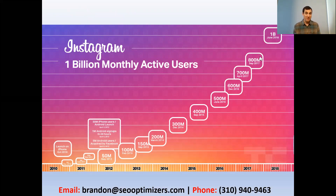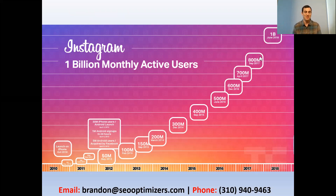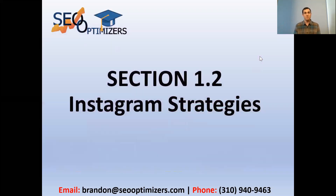Instagram is growing because Facebook owns it and they're promoting Instagram as much as they can, knowing that Facebook is kind of on the decline — not as many people are using Facebook as they used to. Instagram just keeps growing, so they're pushing it as much as they can. If you've worked with Facebook before, the algorithms and reach are pretty similar. Just be aware that Instagram is slowly turning into Facebook.